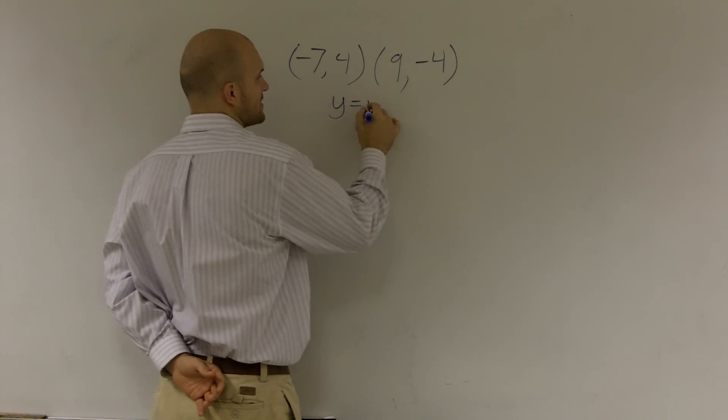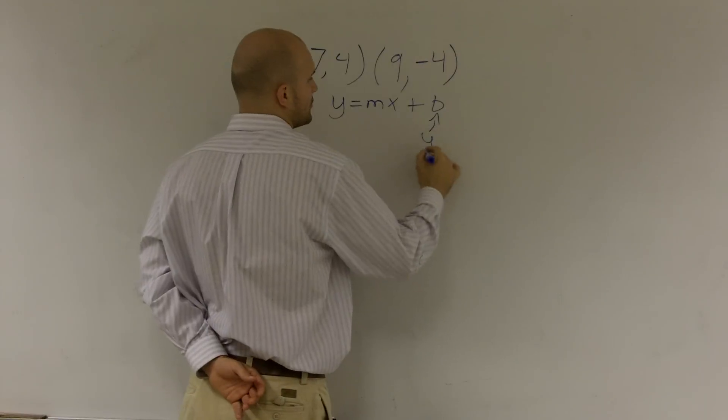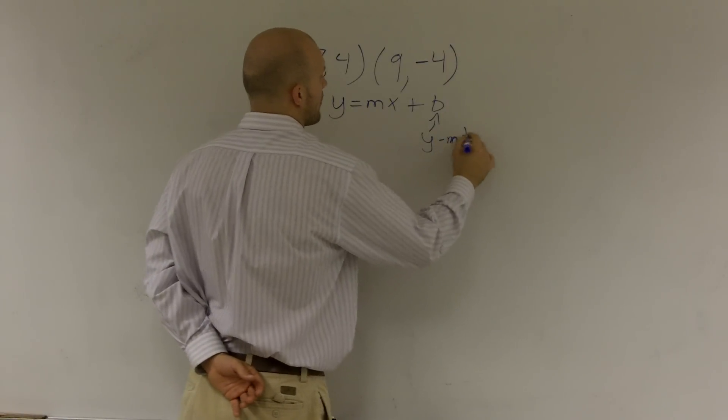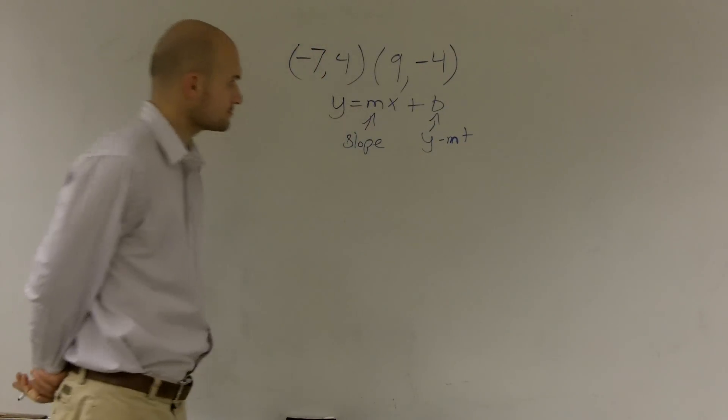So if you remember, slope intercept form is y equals mx plus b, where b is your y-intercept and m is your slope.